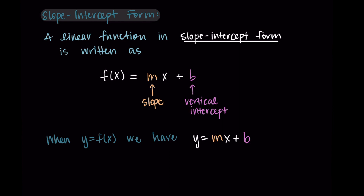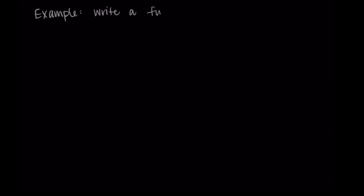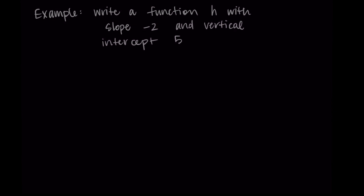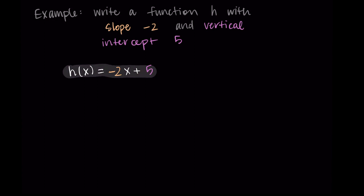Let's do some examples. First, let's write a function h that has slope negative 2 and a vertical intercept of 5. Starting with h(x) = mx + b, we just fill in the relevant information. Our slope m is negative 2 and our vertical intercept b is 5, so h(x) = -2x + 5.